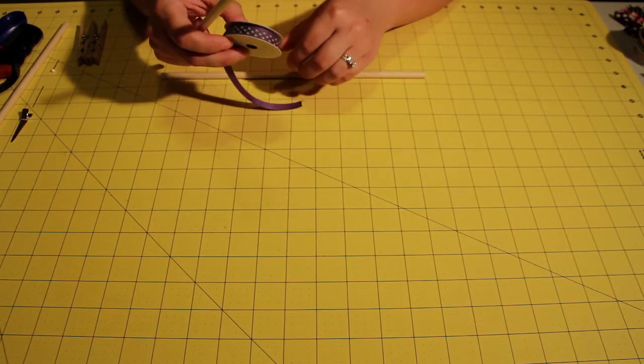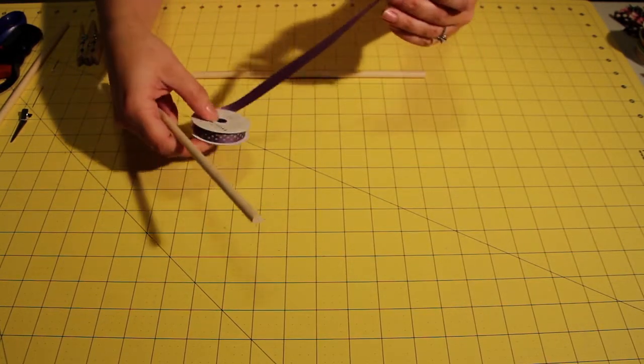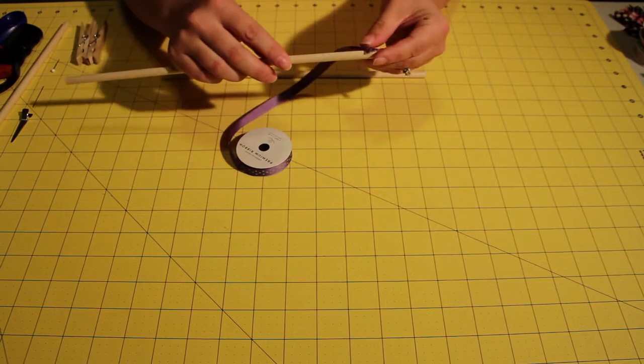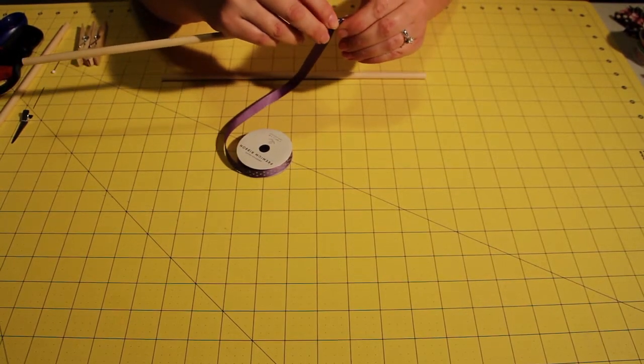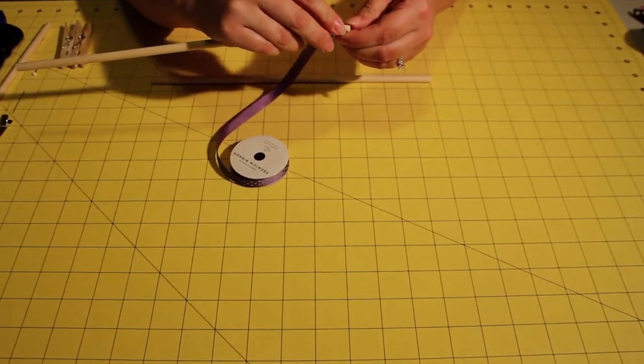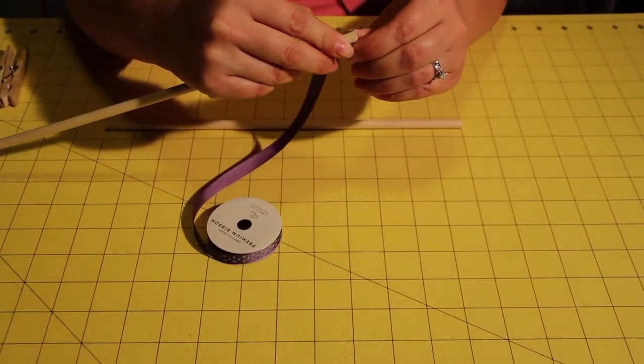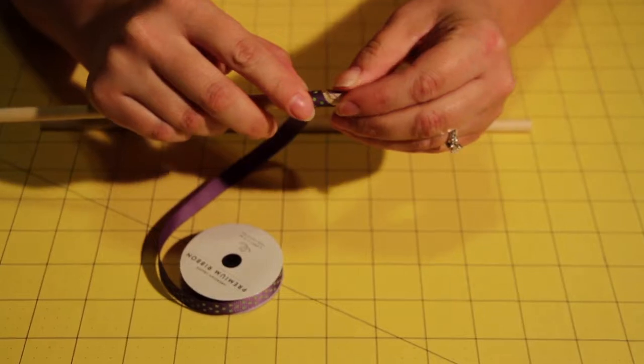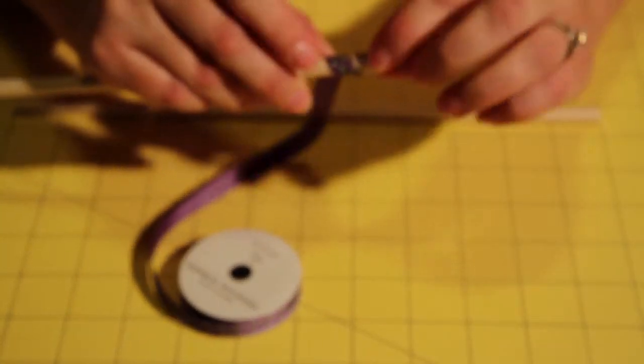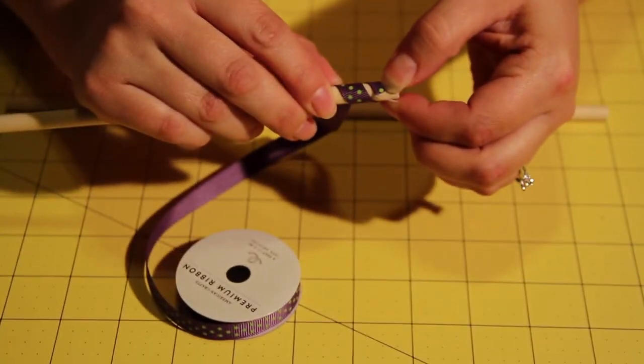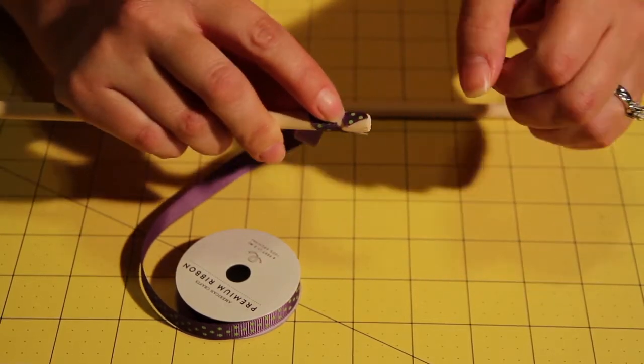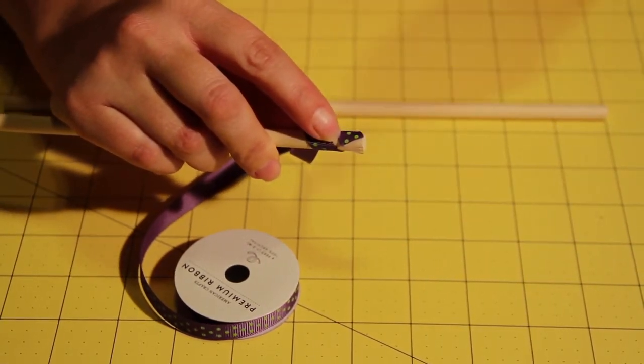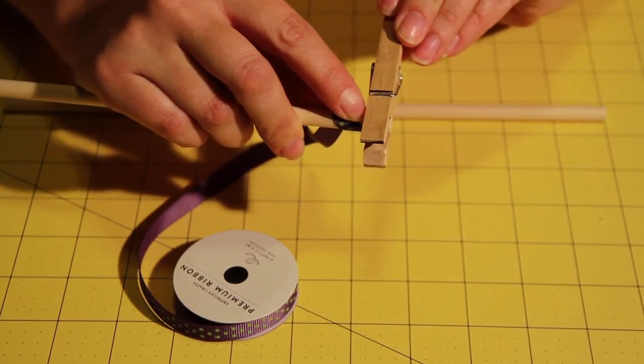I like for one bow to have 5 different styles of ribbon just to add some character to it. So what you are going to do is you are going to start curling the ribbon around the dowel at an angle like this. On the end you are going to use your clothes pin to hold the ribbon in place.